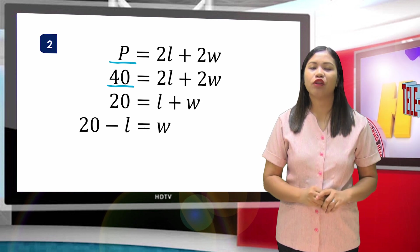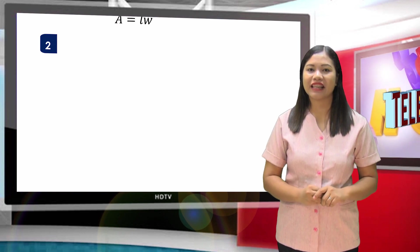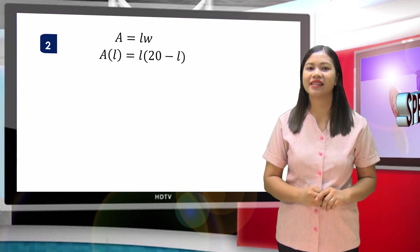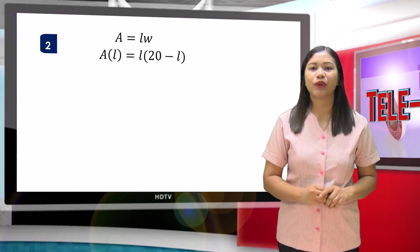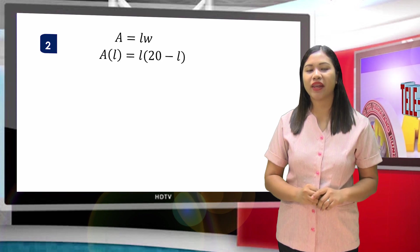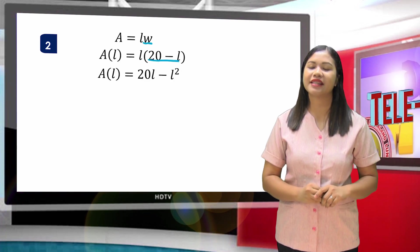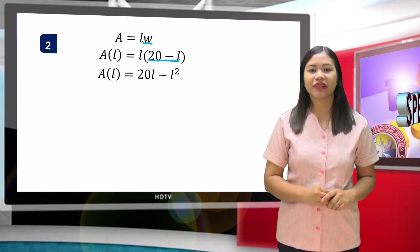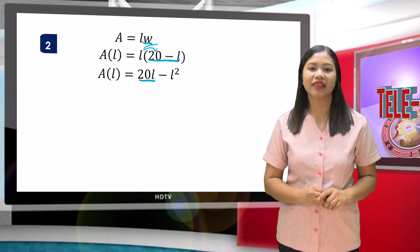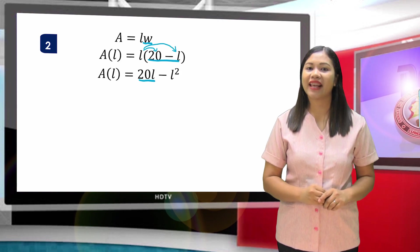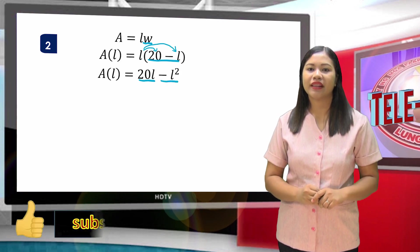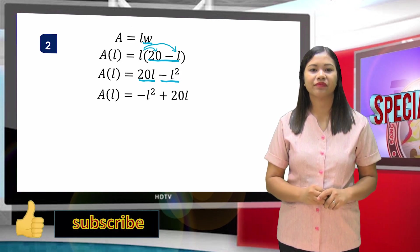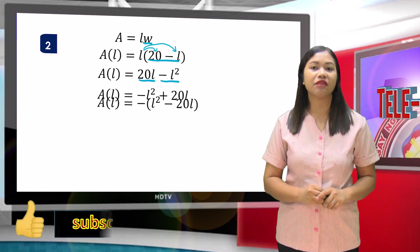Since the area of a rectangle is A = L × W, the left area can be expressed as A(L) = L(20 - L), since W = 20 - L. Using distributive property, we have L times 20 equals 20L, and L times negative L equals negative L². Let us rearrange the terms. Factor out negative 1.